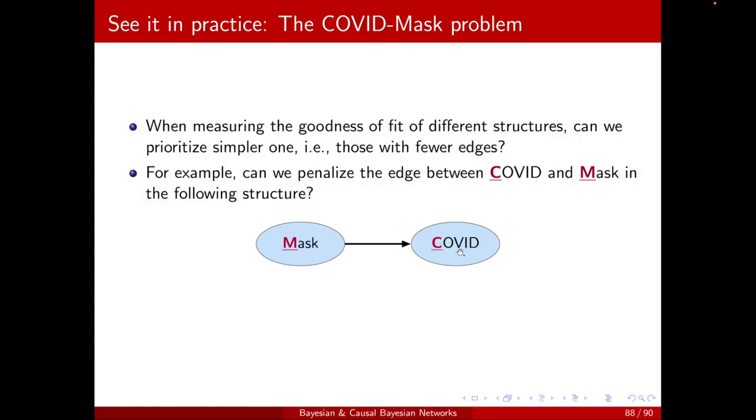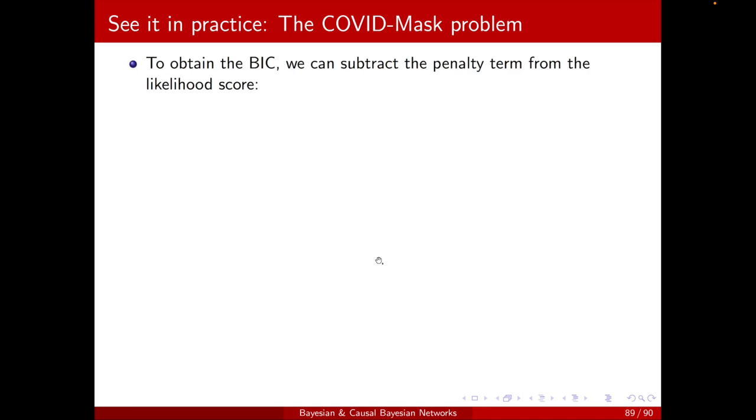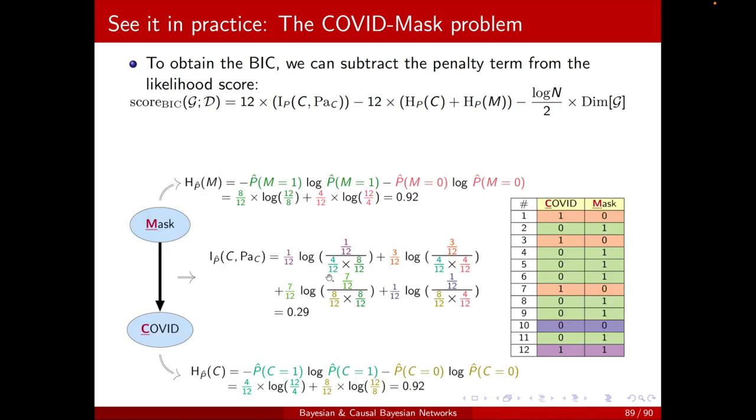Great. So, back to our question, can we somehow penalize this edge? And, the answer is yes, we can do that using the BIC score. How can we calculate it? Well, it's basically the same as the likelihood score, just with this additional complexity term. So, we can do all the math as in the previous case. It's basically a copy and paste.